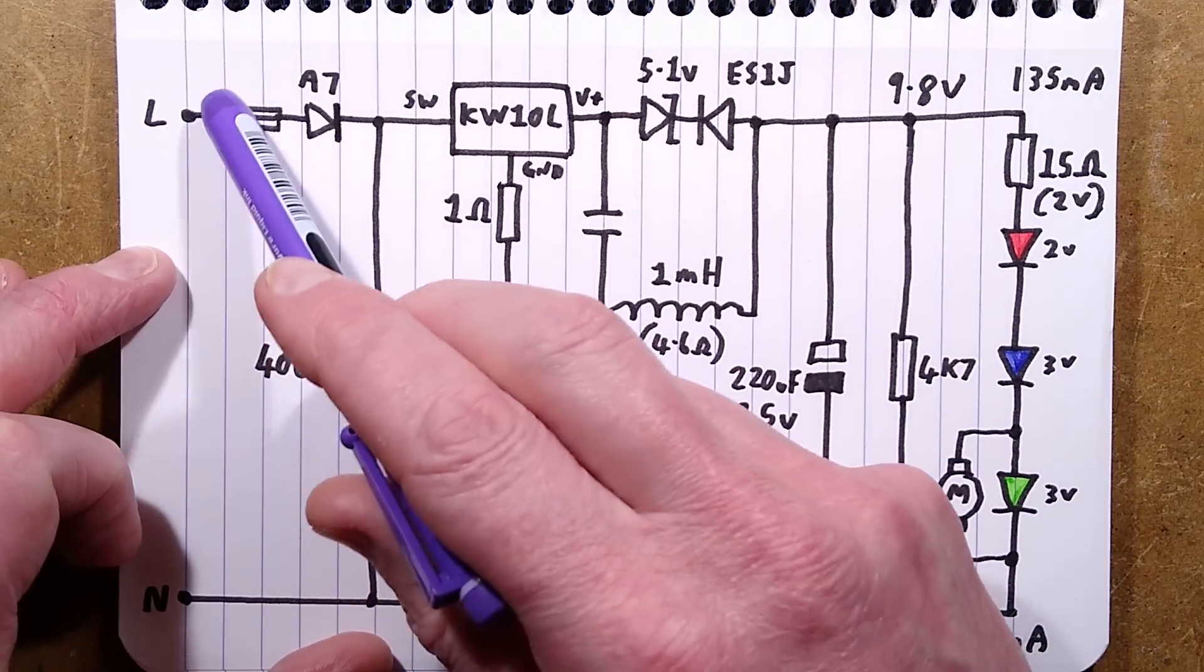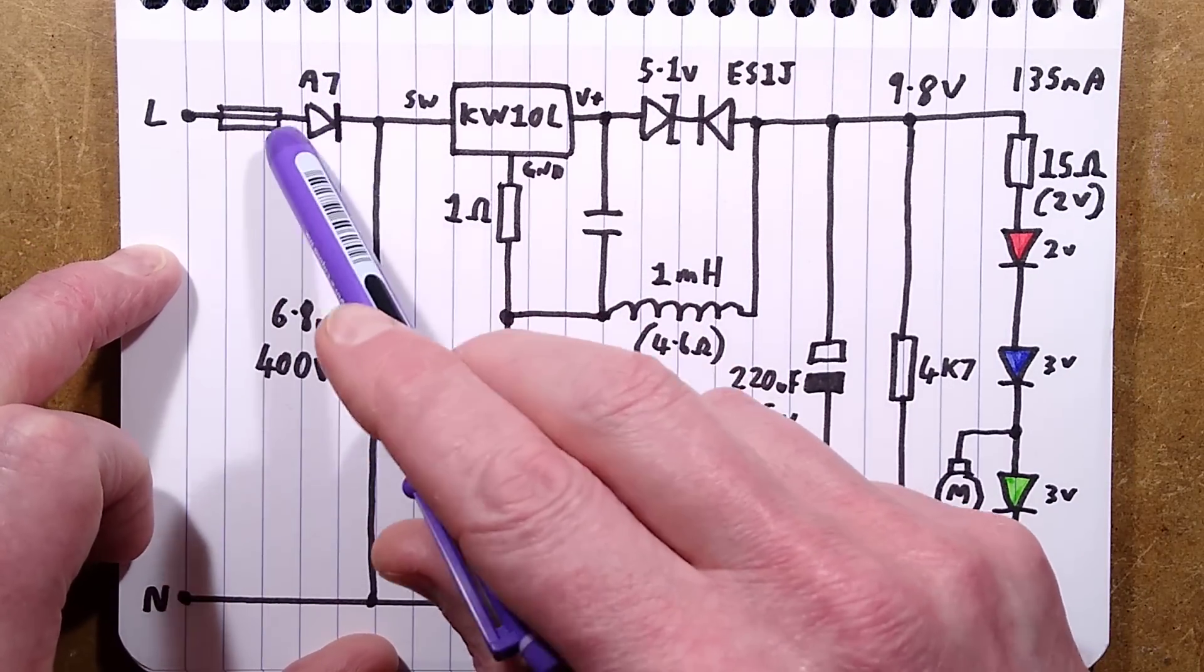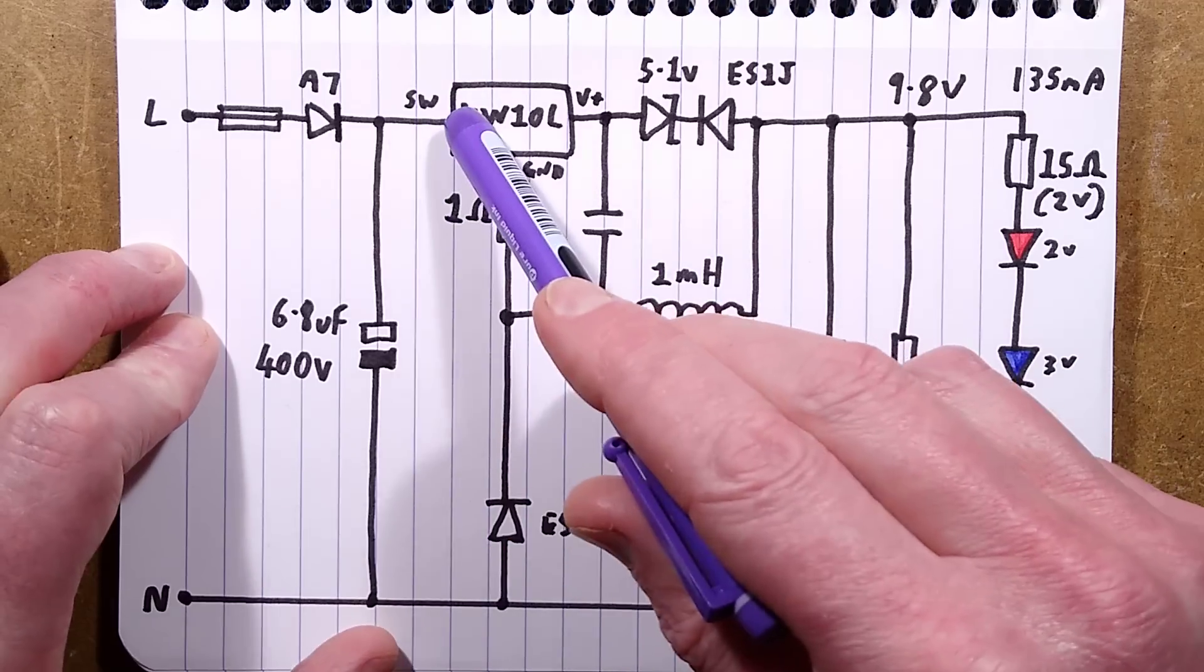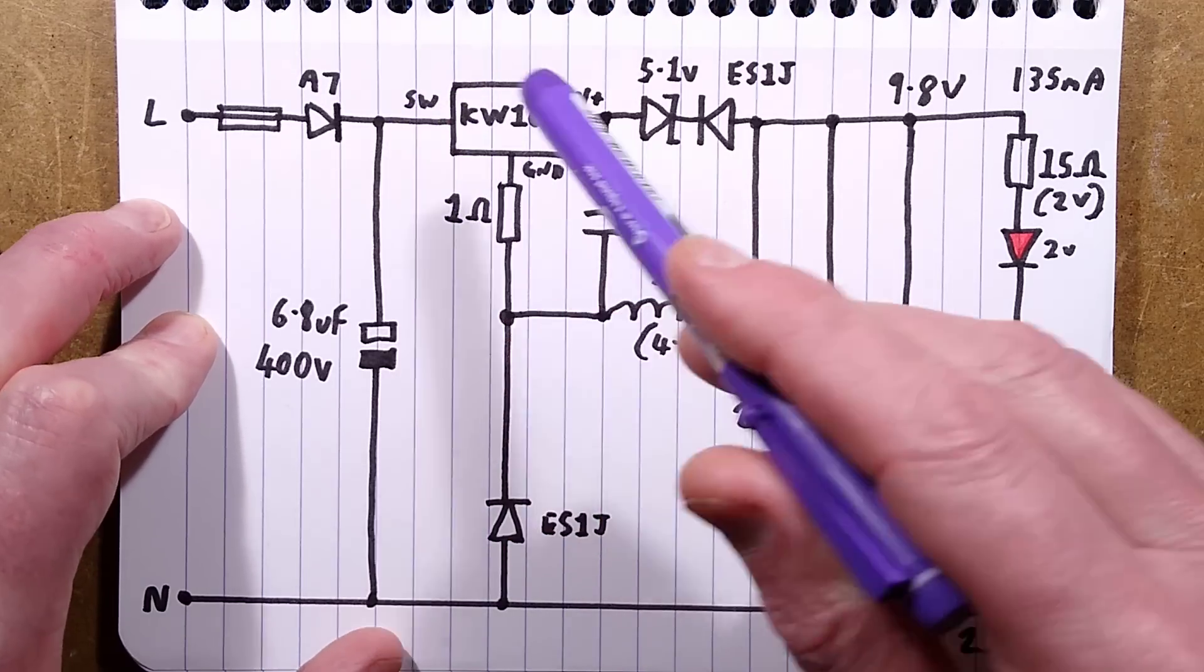So there's the supply coming in, the improvised fuse, the standard one amp diode, the 6.8 microfarad death beam capacitor, and then it goes to this little chip. It's this switching input to that chip.